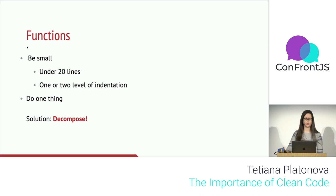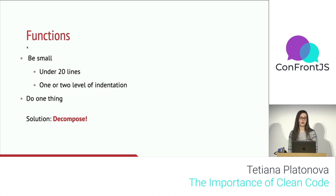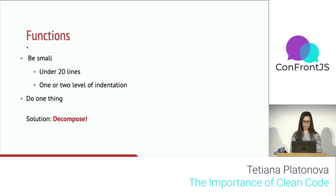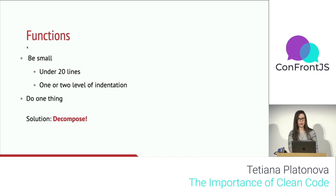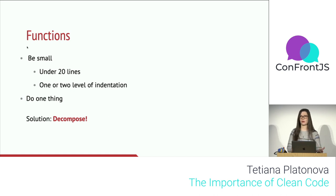Next: we write functions. The first rule says functions should be small. The second rule: they should be even smaller. Small functions are under 20 lines and have no more than two levels of indentation. The third rule: functions should only do one thing — the so-called Single Responsibility Principle. To achieve this you do decomposition: extract things into smaller variables, move some stuff around, and you end up with cleaner code.